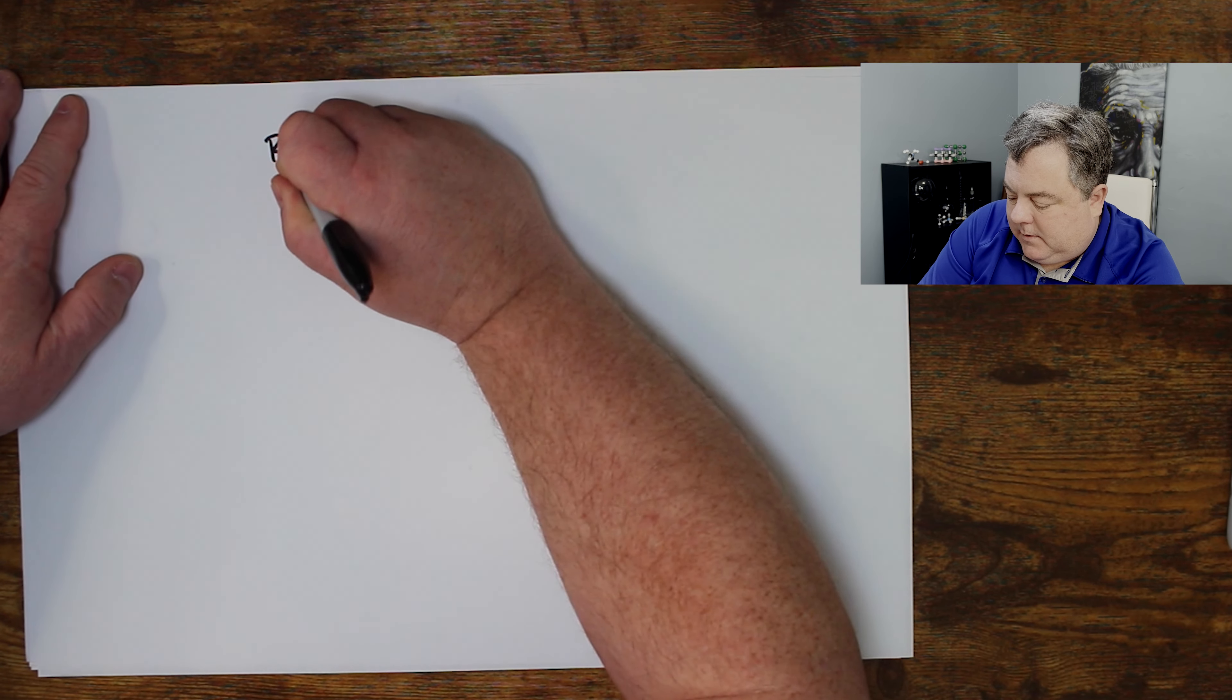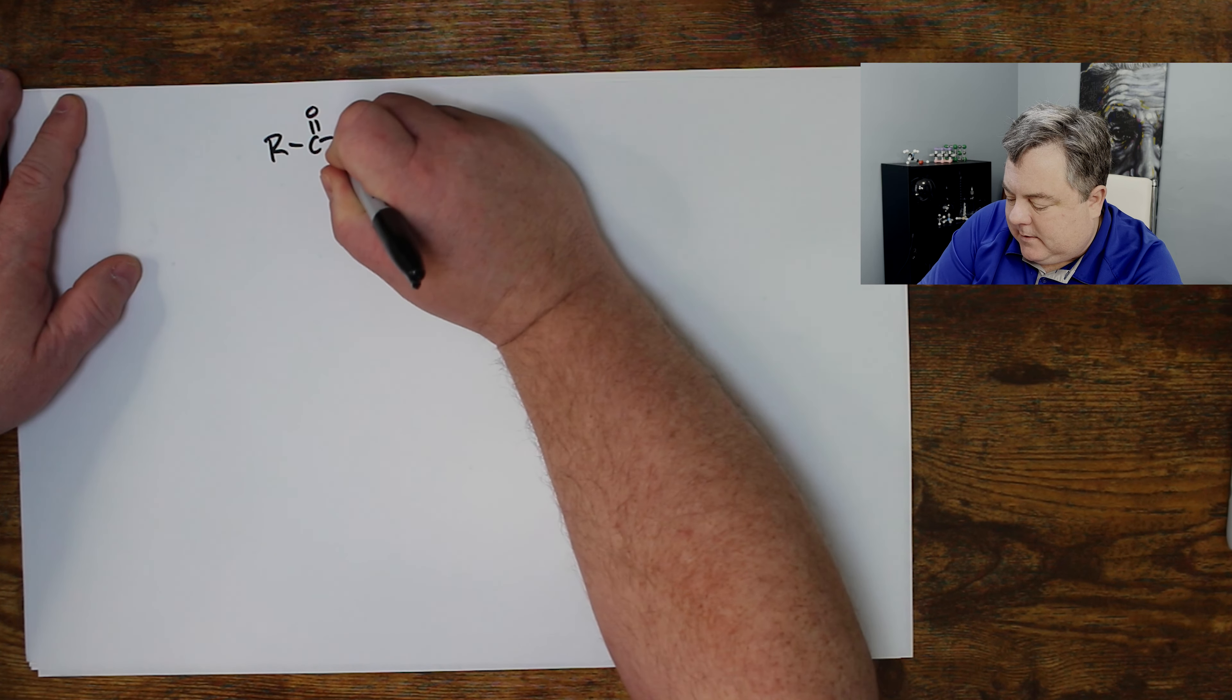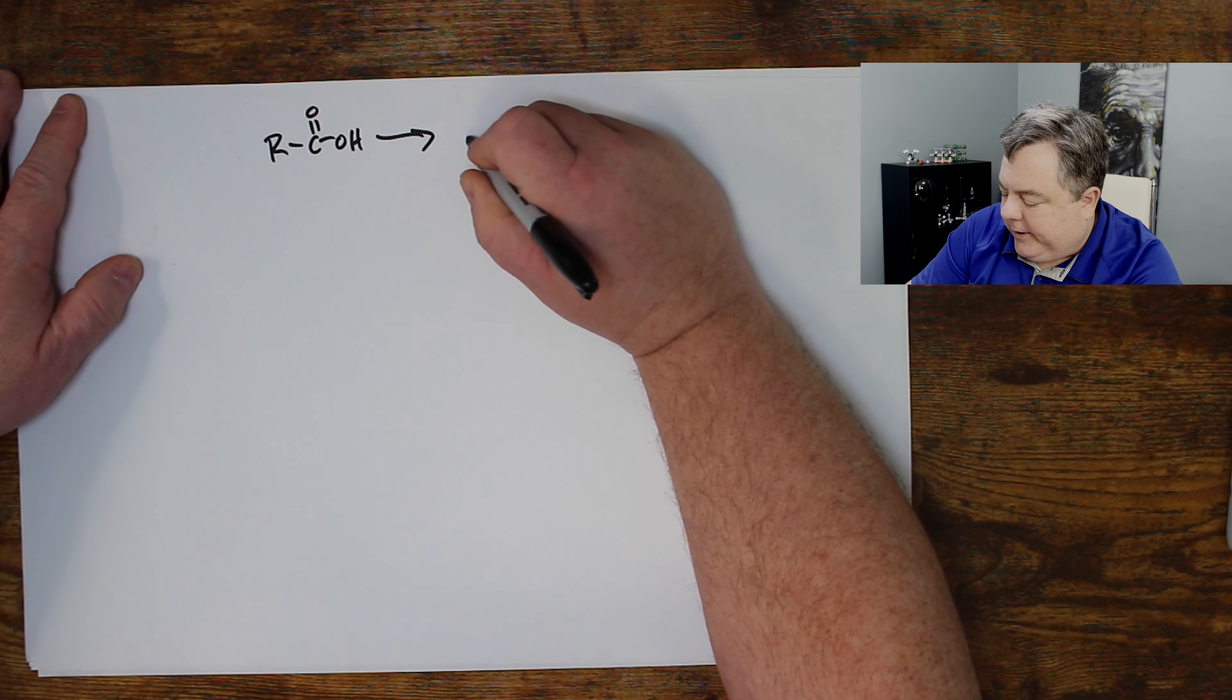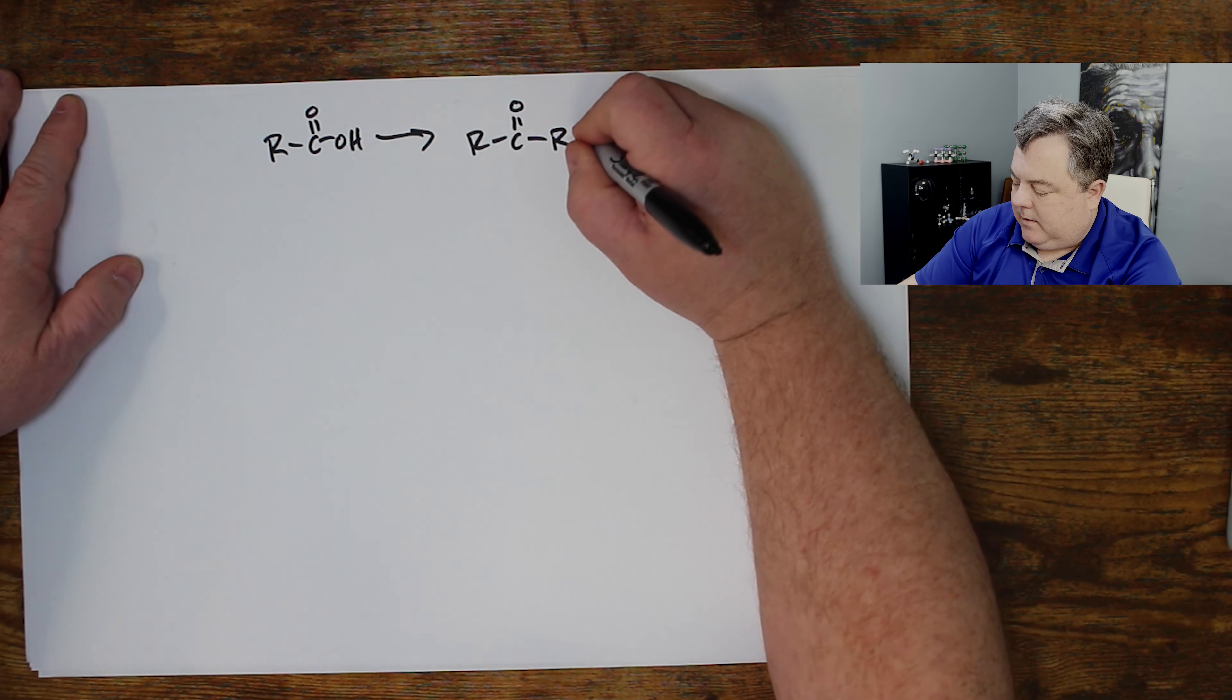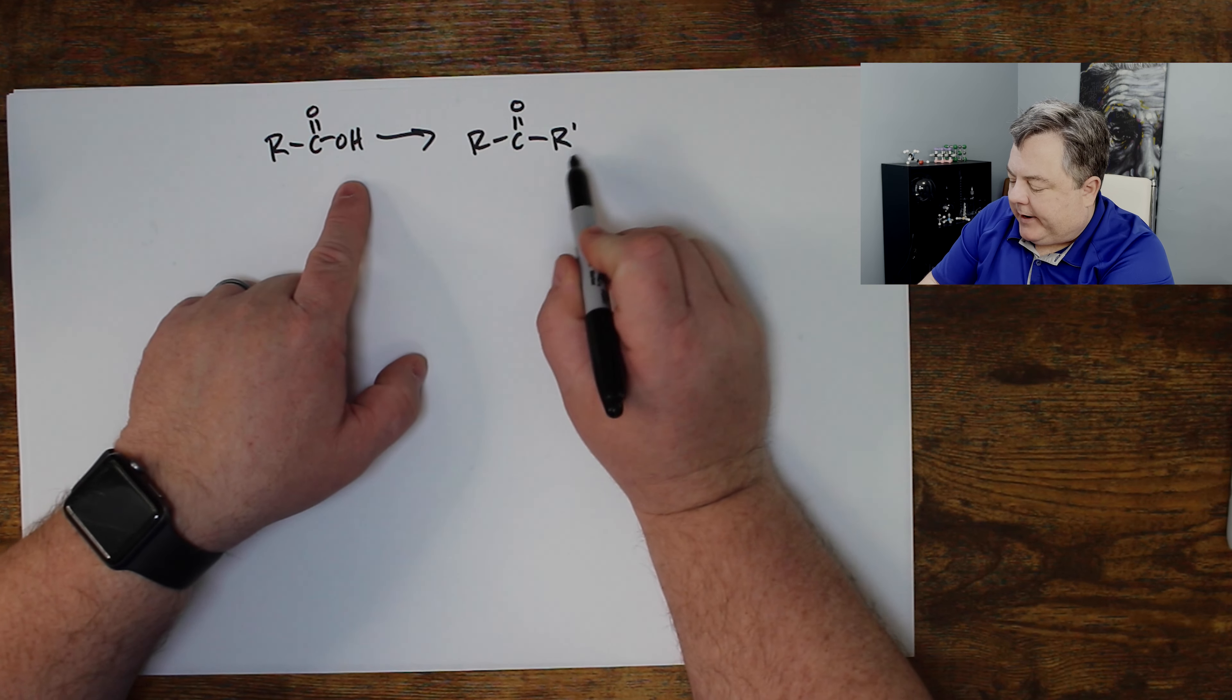In this video I'm going to show you how to make ketones from carboxylic acids. Let's jump right in. Carboxylic acids can be turned into ketones.